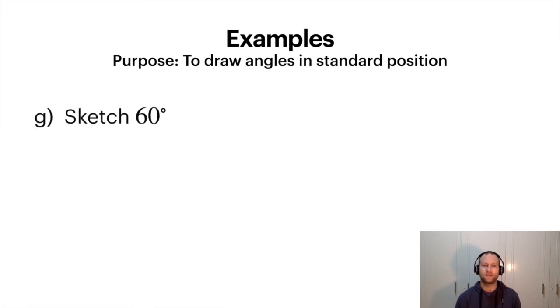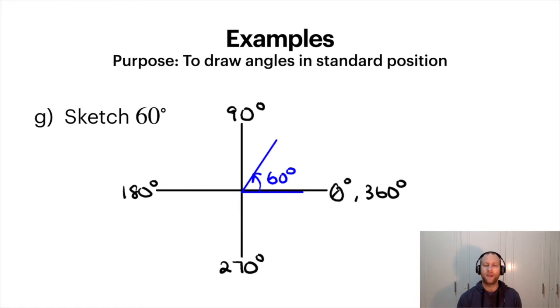So let's sketch 60 degrees. So starting at the positive x-axis you rotate 60 degrees and you get here. Notice for something like this I'm going to mark how approximate it is. So knowing which quadrant it is and how close it is to the 90 degrees or the 0. If this one was closer to the 0 than the 90 that would be wrong.